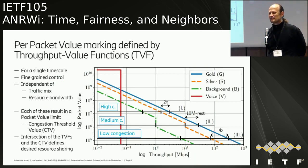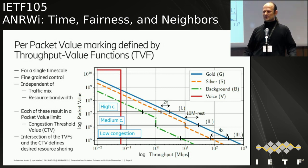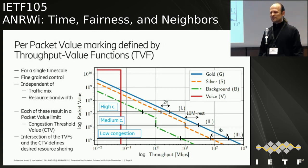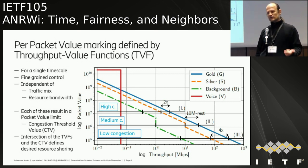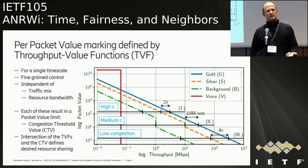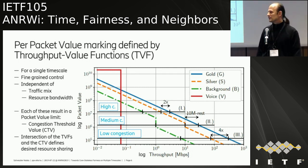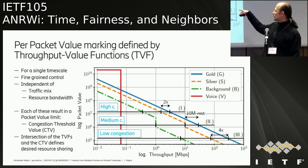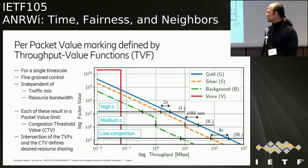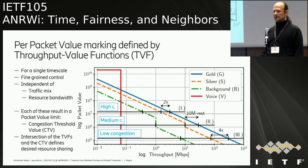A short introduction to pair-packet value marking versatility: in the PPV framework, we define policies through throughput value functions for a single timescale, providing very fine-grained control independent of traffic mix and resource bandwidth. Given a traffic mix and resource bandwidth, there will always be a congestion threshold value — a horizontal line on the throughput value function curves. The intersection of these curves and the threshold gives throughput targets at all congestion levels: high, medium, and low.